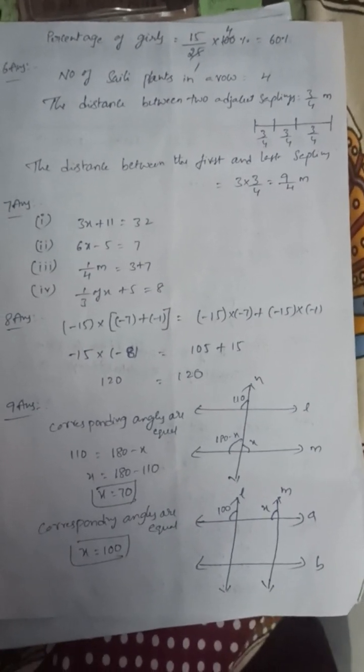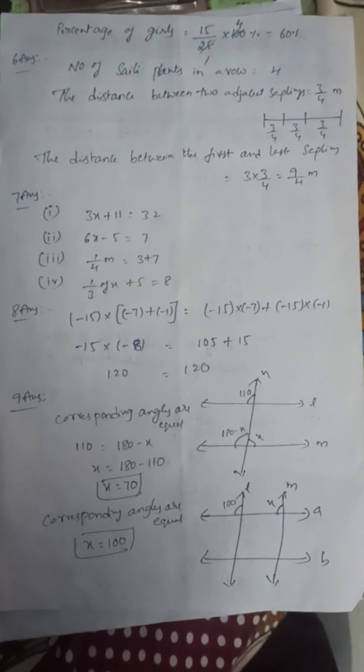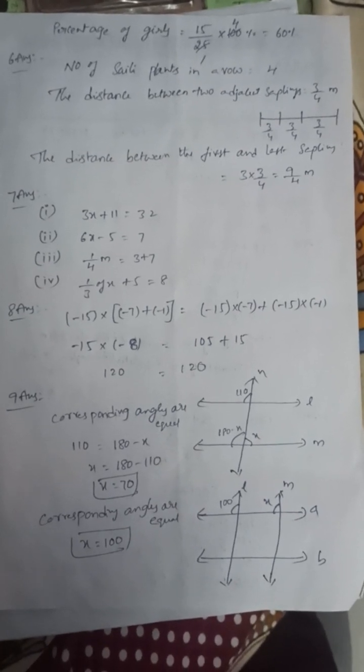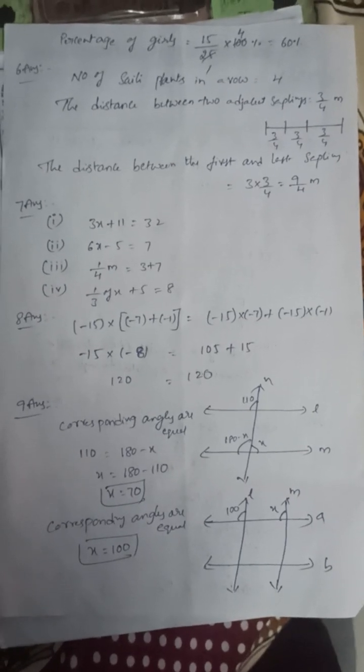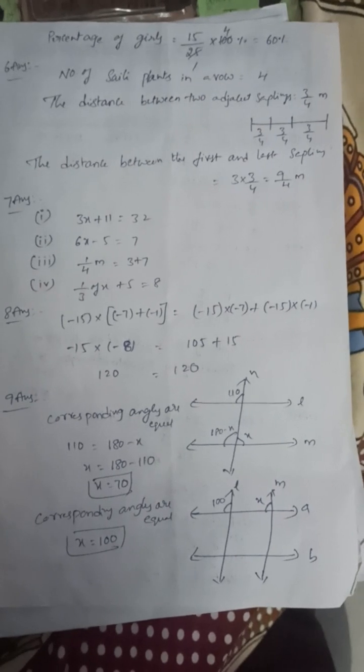Next, seventh one: Express the statement in equation form. 11 is added to 3 times x equals 32. That is 3x plus 11 equals 32. Next, 5 subtracted from 6 times a number equals 7. That is 6x minus 5 equals 7. Next, one-fourth of a number is 3 more than 7.